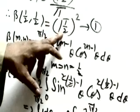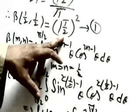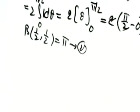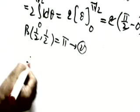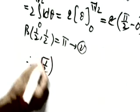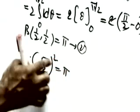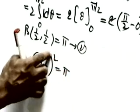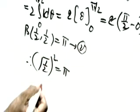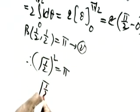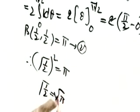From equation (1): Γ(1/2)² = π. Taking the square root: Γ(1/2) equals √π. This completes the first method for proving Γ(1/2) = √π.